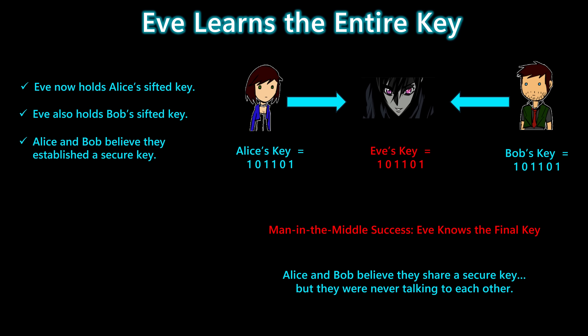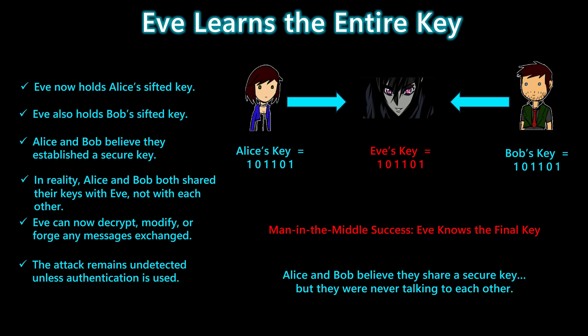Alice and Bob believe they've established a secure shared key, but in reality, they each shared their key with Eve, not with each other. With both keys in hand, Eve can decrypt, modify, or forge any messages they exchange, and the attack goes completely undetected unless authentication is used.